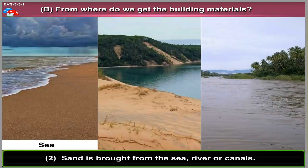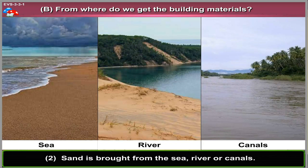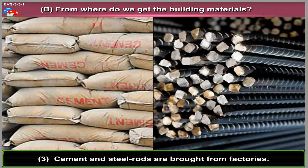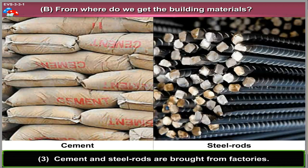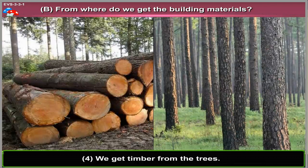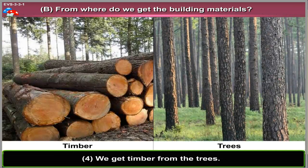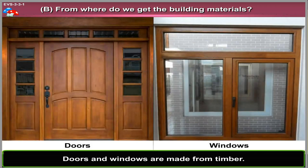Sand is brought from the sea, river or canals. Cement and steel rods are brought from factories. We get timber from the trees. Doors and windows are made from timber.